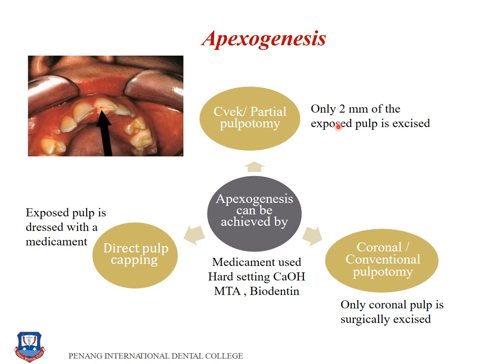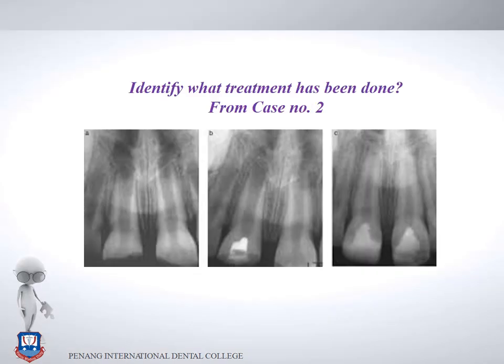Quick recap: for a traumatic or iatrogenic exposure of 2 mm or less, cervical pulpotomy is appropriate. For exposures greater than 2 mm surrounded by carious dentine, remove the carious dentine and perform a conventional pulpotomy. Apexogenesis is achieved by either of these three procedures depending on the clinical scenario, and it applies only to permanent teeth.